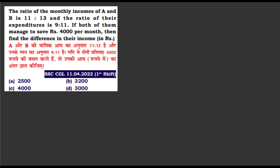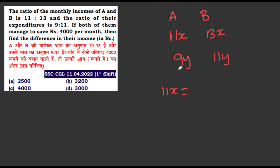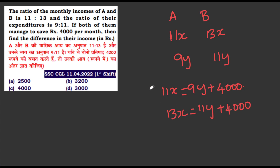Okay, the ratio of monthly incomes of A and B is 11 is to 30, and the ratio of their expenditures is given. Both of them save 4,000. Now the first method: let income be 11x and 13x. Expenditure is 9y. So 11x equals 9y plus 4,000, and 13x equals 11y plus 4,000. We get an x-y ratio from this system.